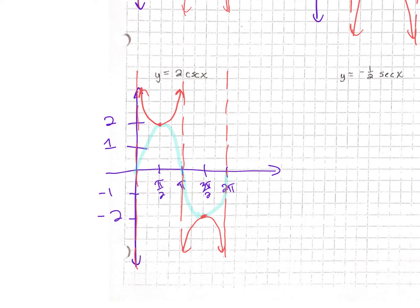A student asks: can we just know that the critical points are supposed to be at 2 and negative 2 without drawing the sine curve? Yes — some of you might not need to actually draw the sine curve if you can visually see where your asymptotes need to be. For most people, especially to begin with, it's just helpful to see it, because it reinforces that you got it right.